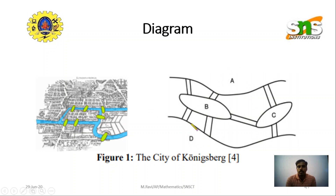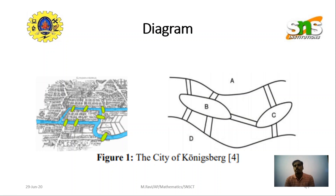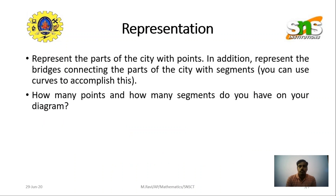A and D are the banks of the river, and they are connected with the two islands B and C by seven bridges. You have to start from any point and visit all the bridges exactly once and return to the same point. Graph theory represents this using vertices and edges — everything can be represented in terms of graphs.